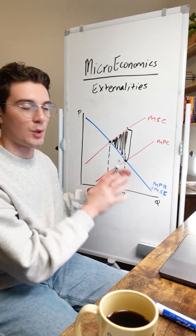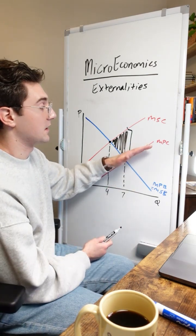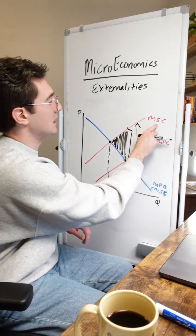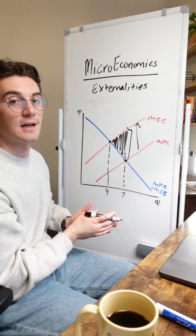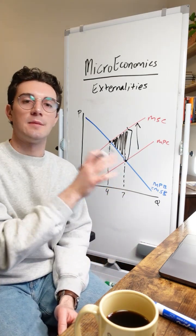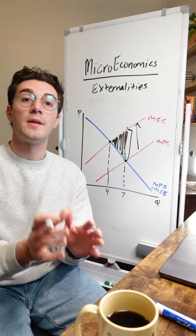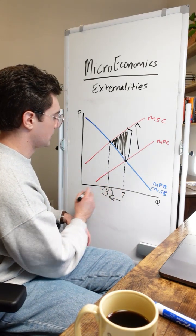And what the government can do to resolve something like this, this could apply to positive externalities as well, is in this case they could tax the private market to bring up the marginal private cost to equal the marginal social cost so that the private market and society are aligned. Or with the positive externality example before, the government might subsidize the private market to output more units. It's all about the government getting involved to make sure that the private market outputs at the socially optimal cost.